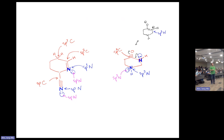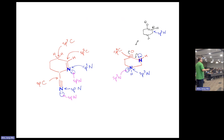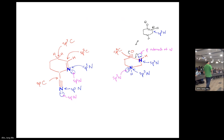With SP2, there are three SP2 orbitals: one used to make a bond with this carbon, another makes a bond with hydrogen, the third makes a bond with this carbon. So all three SP2 orbitals are used up. The lone pair has to go to the p-orbital — that's where it's going. It's the same situation we were talking about before.